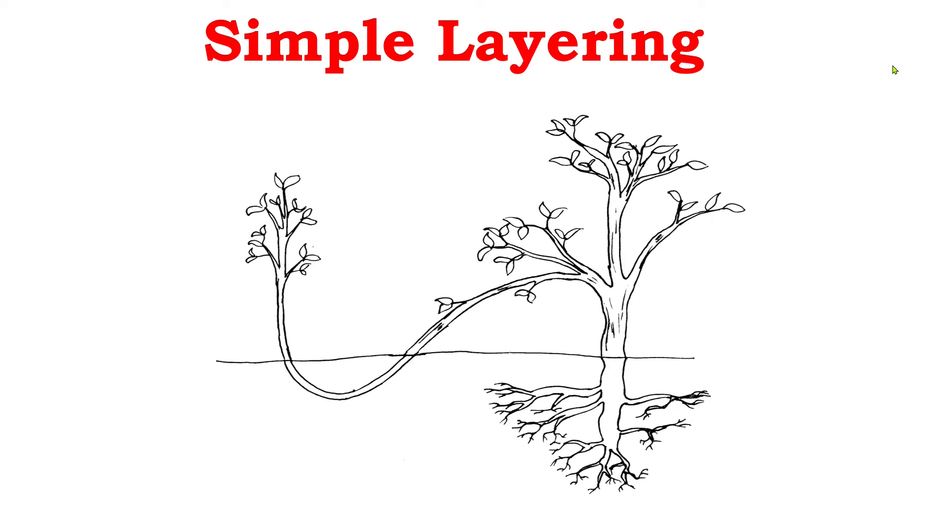Now what is simple layering? This diagram represents simple layering. In this method, the stem of the lower part of the parent plant, which is older than one year, is pulled from about 20 centimeters down from the tip towards the ground and is buried into moist soil. After some time, usually two to three months, roots develop from the buried stem. It is then left to grow for a few months. At the end of the rainy season, the new plant is detached from the parent plant from the sharp end and transferred to the nursery bed. This way, simple layering is done.